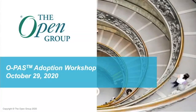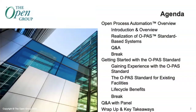Here is the agenda we have planned for today. First, we're going to start with an overview of the Open Process Automation Forum itself, the objectives of the group, and then talk about motivation as well as activities that go on in the forum. We're going to talk about security, and then how some of these systems based on Open Process Automation have been realized by end user companies. Then we'll go into a Q&A and a break.